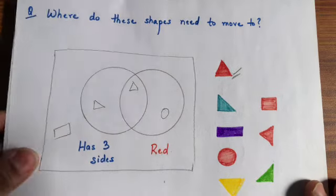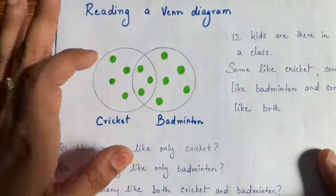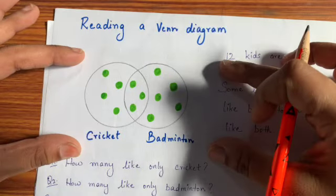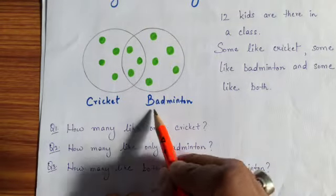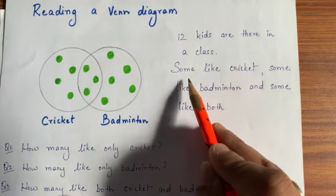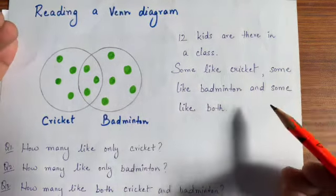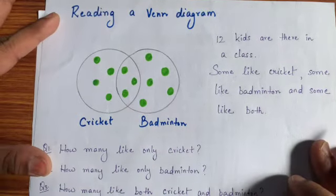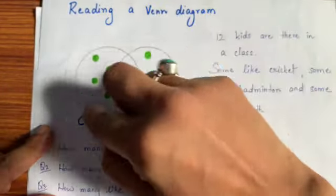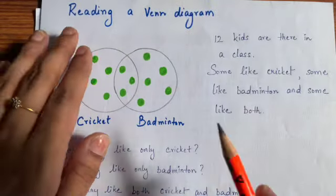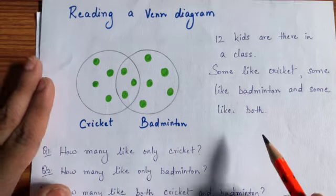Ye ho gaya ek aur Venn diagram. Isi level ke Venn diagram aate hai UKG ya first class ya second class ke bachcho ke. Reading a Venn diagram. Abhi tak to hum jo humme diya tha uswe hum bana rhe the. Ab bachyo ke me ye aise questions bhi aate hai ki sirf itna diya hota hai, question diya hota hai, kuch aur questions diya hote hai. How to read a Venn diagram. Cricket, badminton. Yahaan kya likha hai? 12 kids are there in a class. Some like cricket, some like badminton, and some like both.